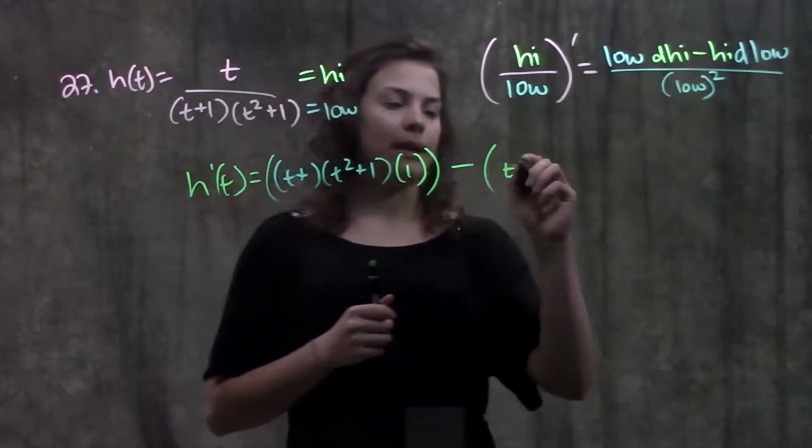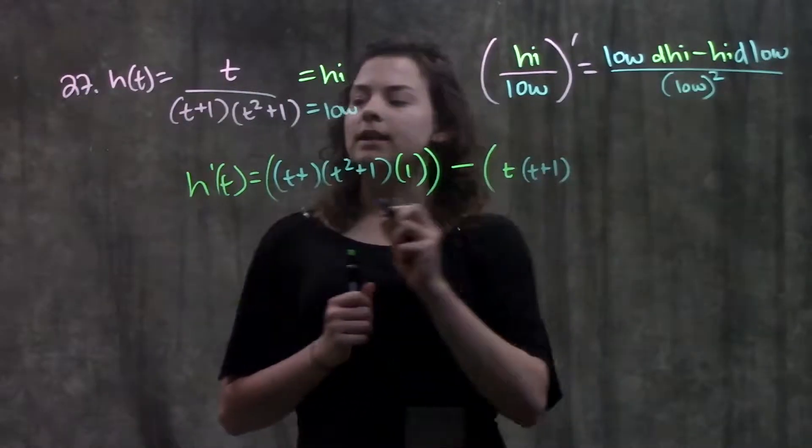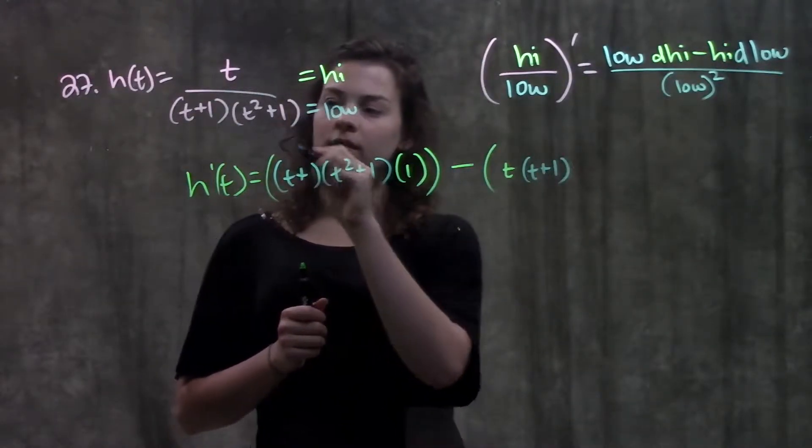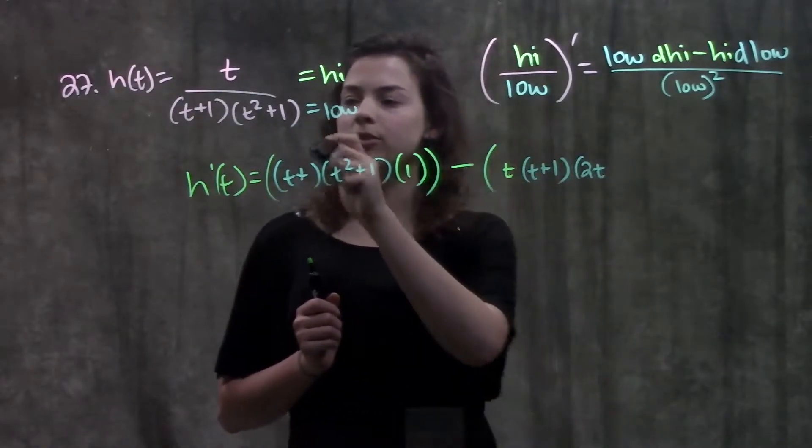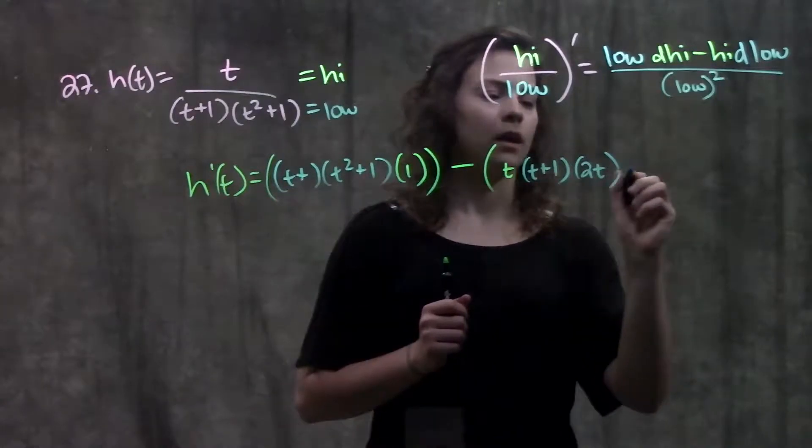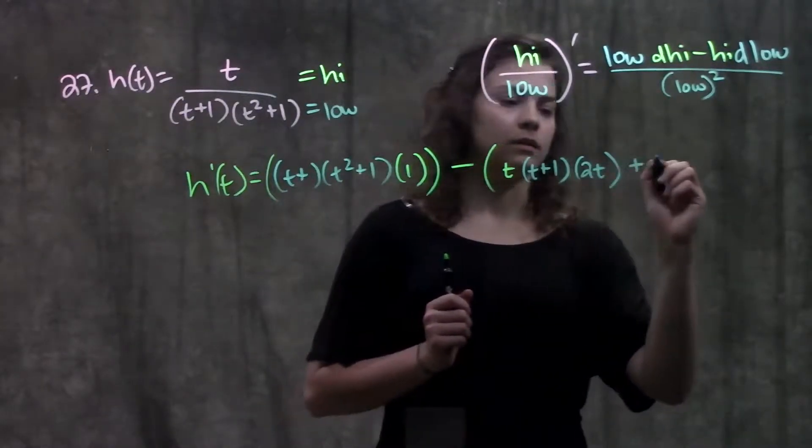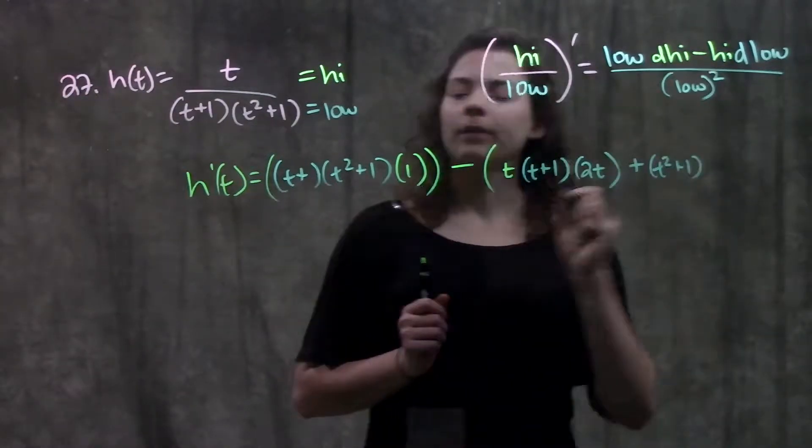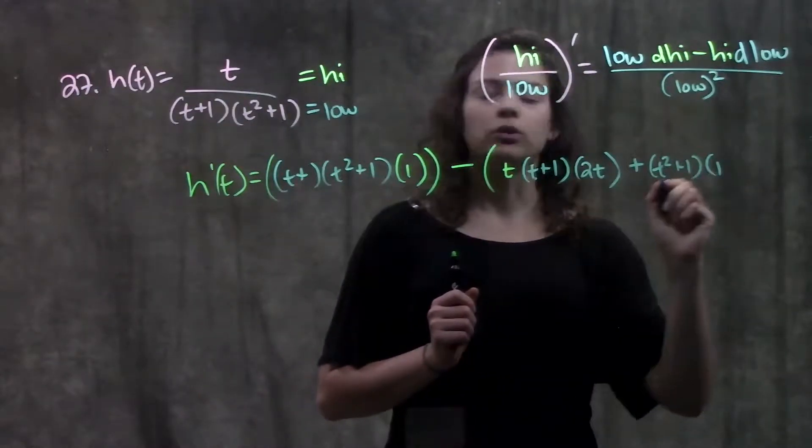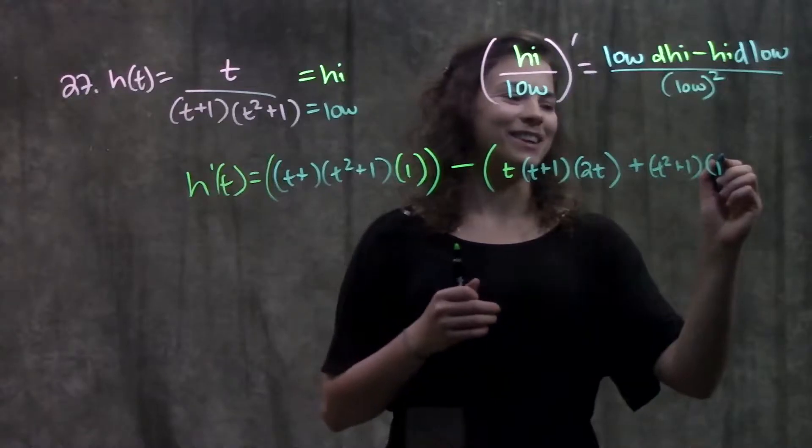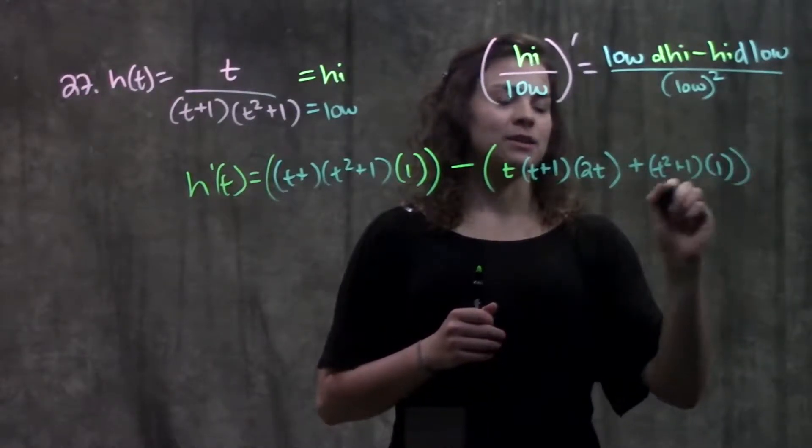The derivative of the low becomes t plus one times derivative of the second part. Derivative of t squared is just two t plus derivative of one is zero, plus my second, which is t squared plus one, times derivative of my first. Derivative of t is one, derivative of one is zero. So I just get this quantity here.